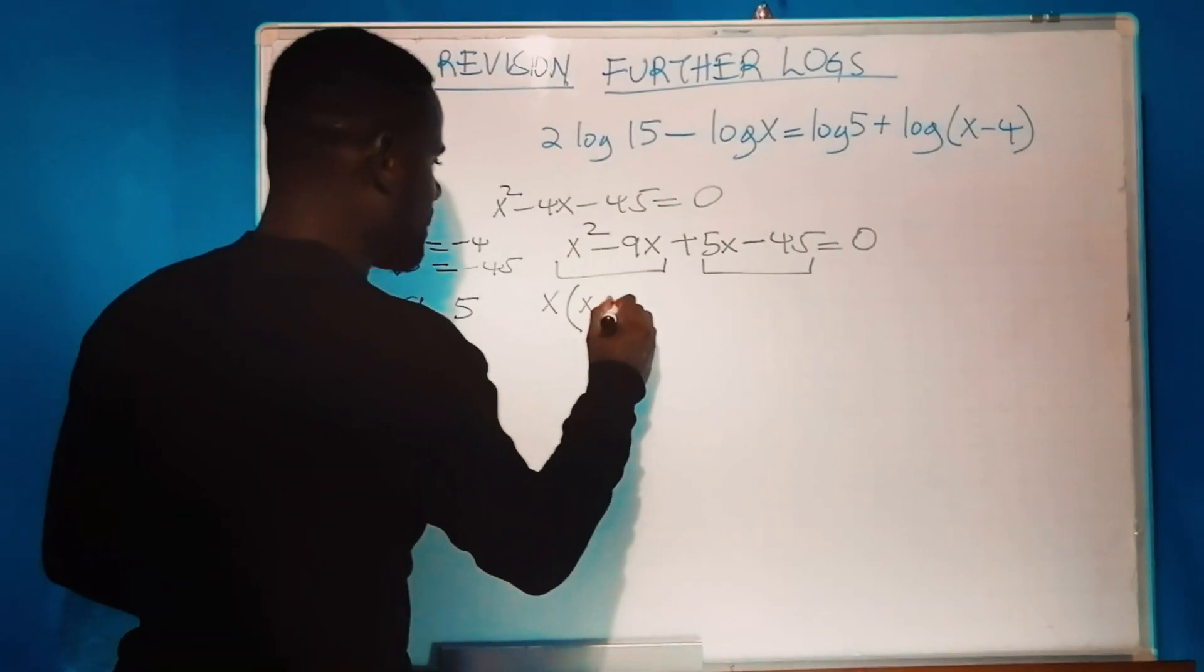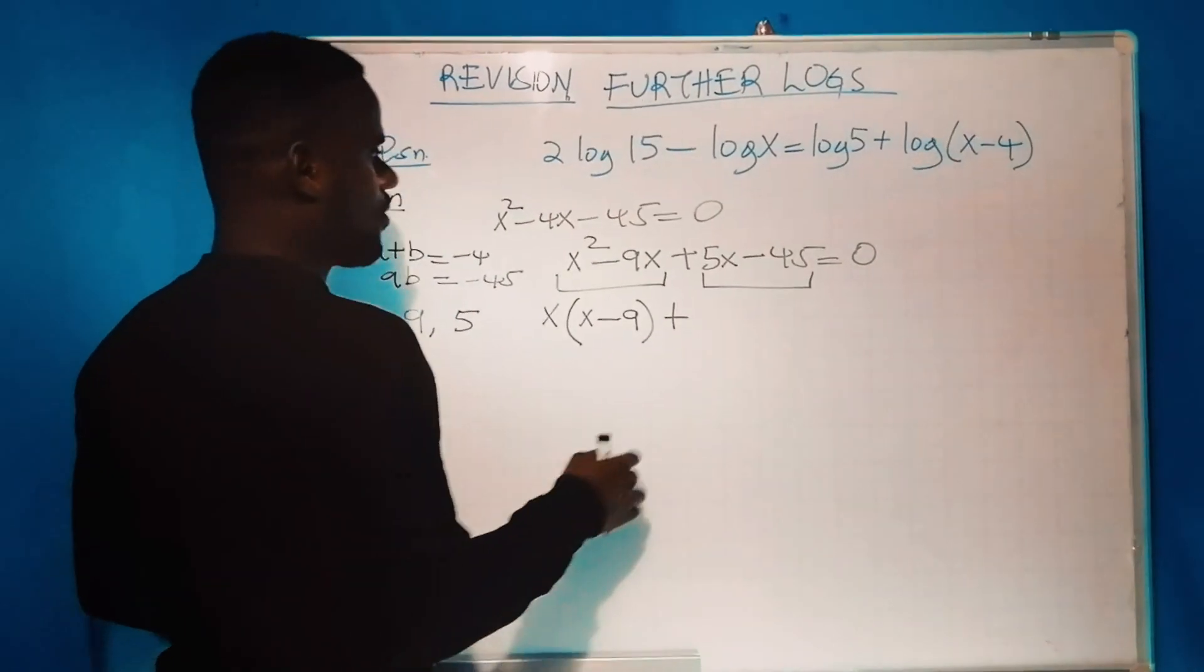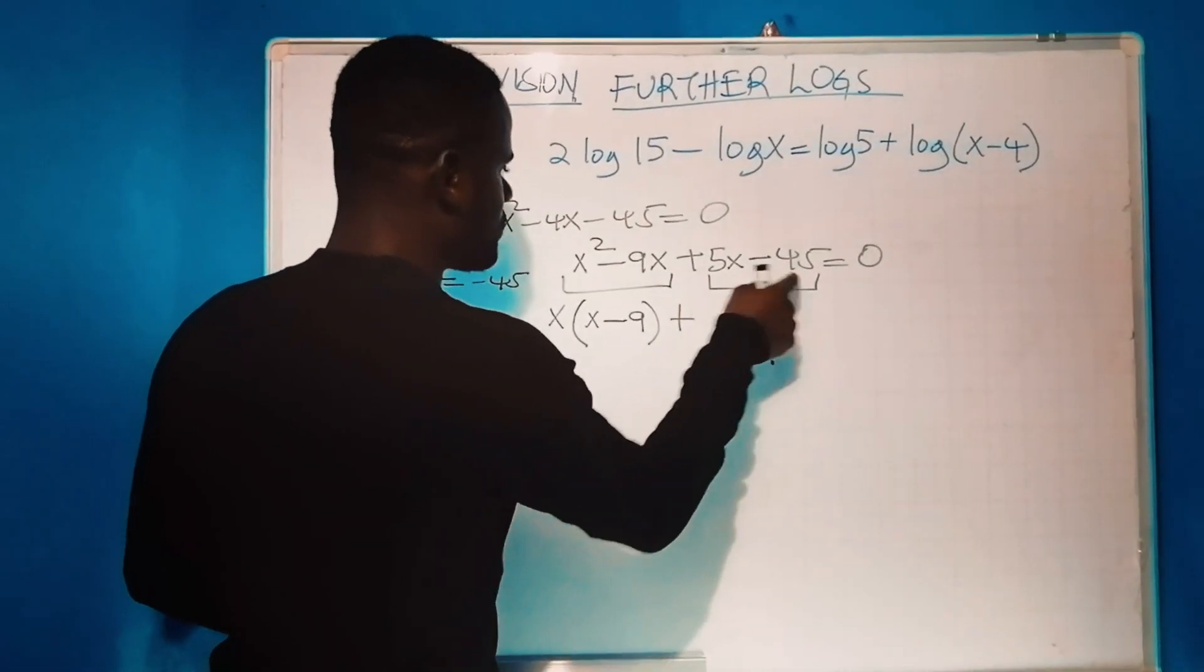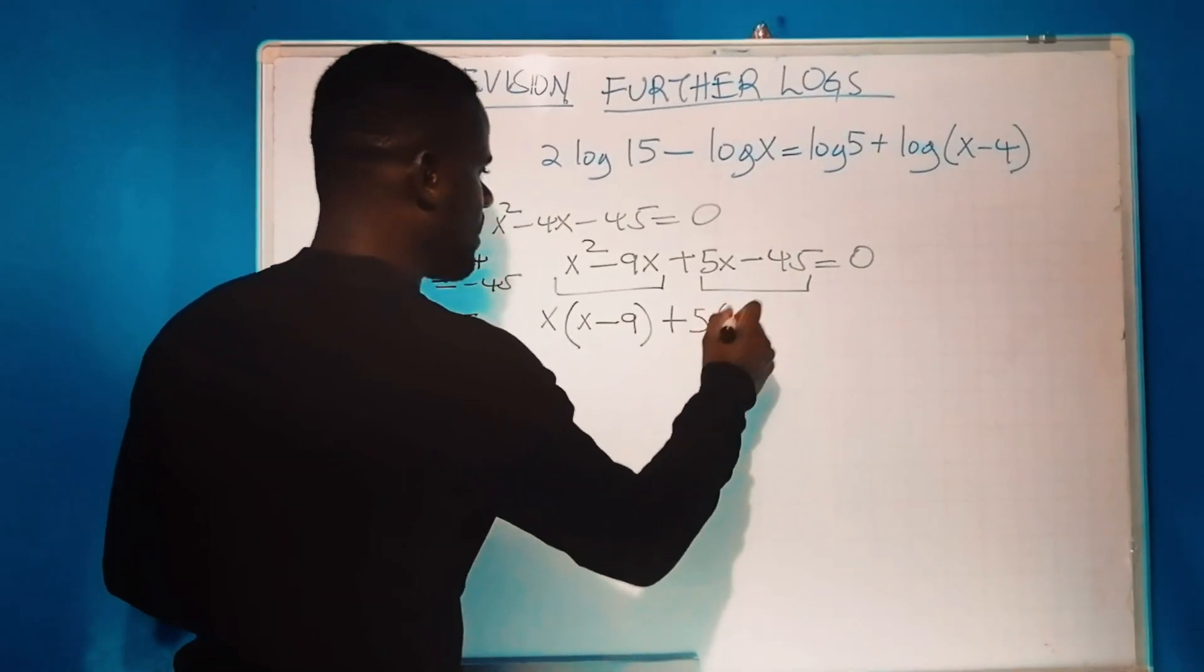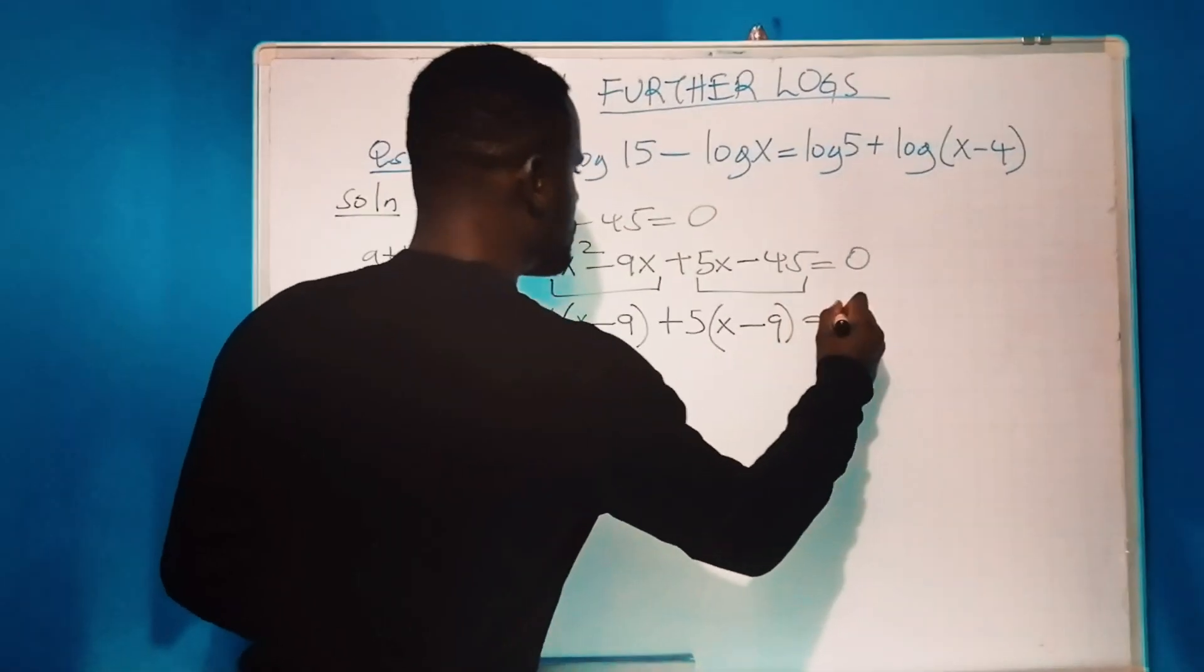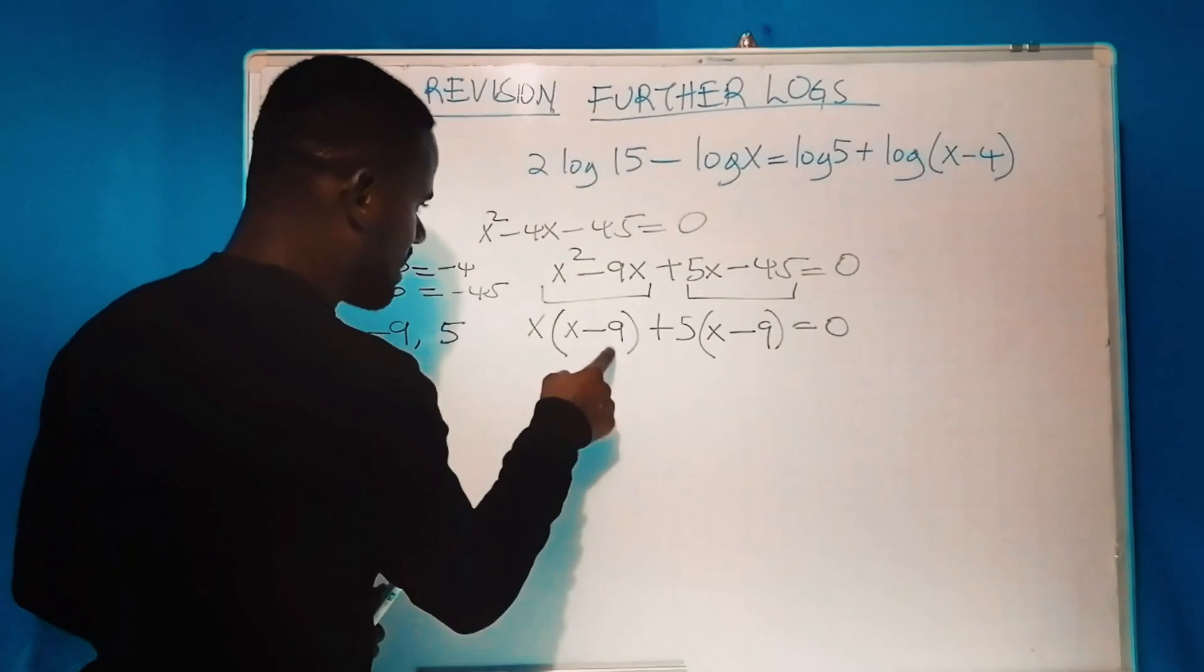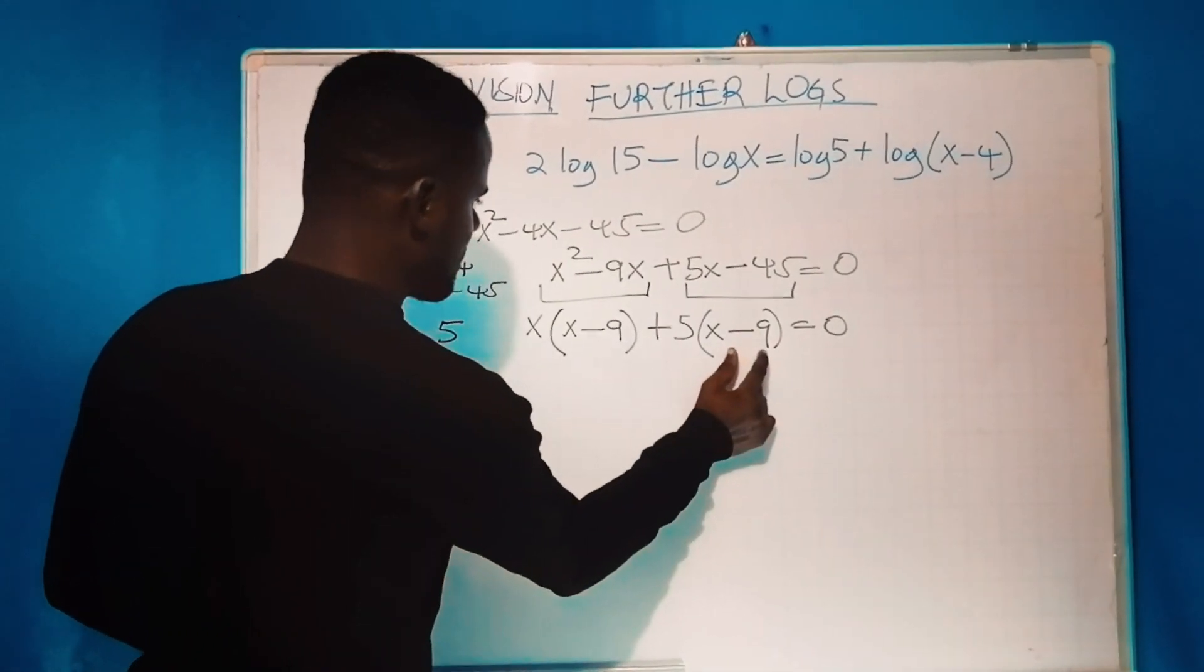will be x - 9. Plus, what is most common between these two? That is 5. Therefore, you'll have x(x - 9) + 5(x - 9) = 0. Notice x - 9 is on this side and also on this other side.